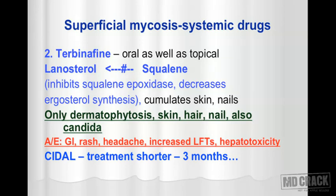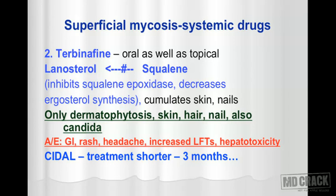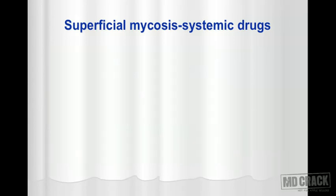The key difference between griseofulvin and terbinafine is that griseofulvin is fungistatic while terbinafine is fungicidal. Because terbinafine is a cidal agent, the treatment duration is shortened — compared to 6 to 12 months for griseofulvin, terbinafine treatment can be cut down to 3 months.